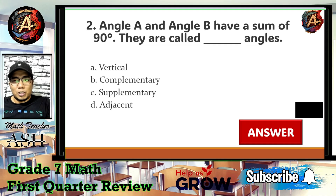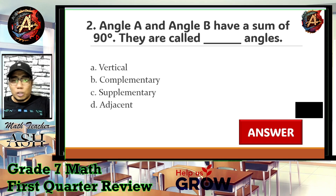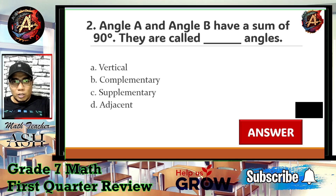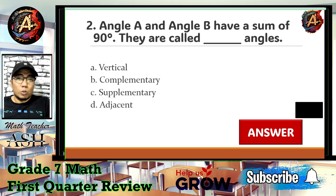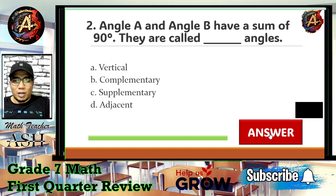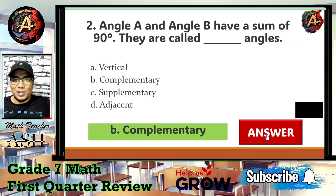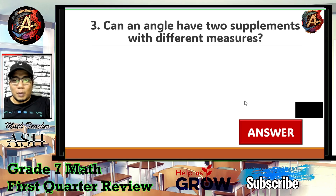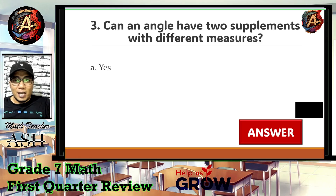Two angles having a sum of 90 degrees — it is not supplementary, because supplementary requires a sum of 180 degrees. The counterpart of supplementary angles is the 90-degree sum, and that is what we call complementary angles — letter B. Let's check whether we are correct. Now let us go to question number three.